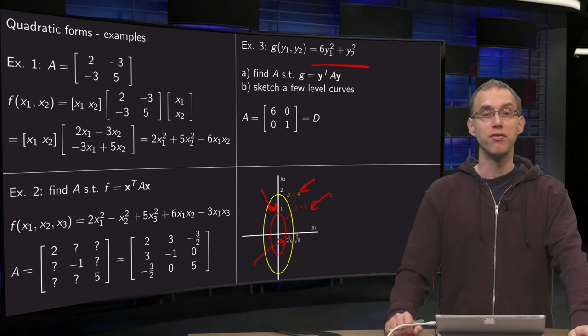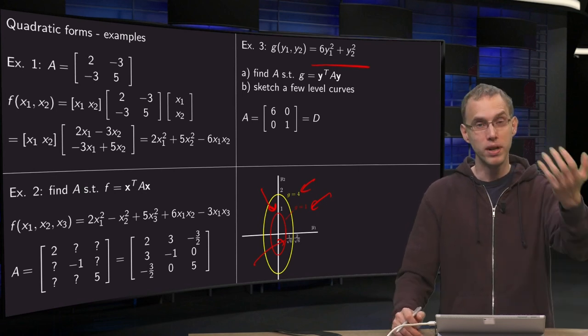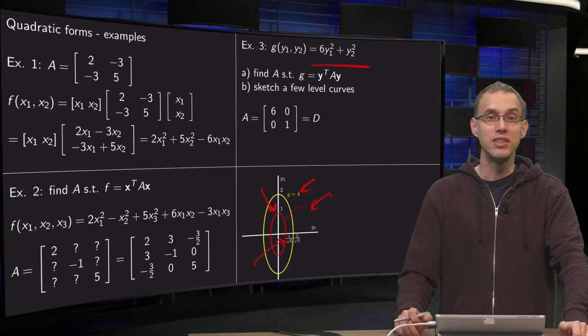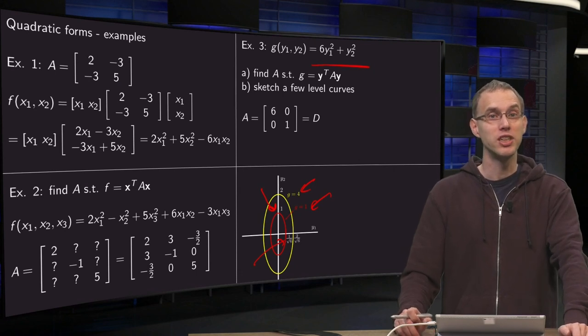If you have a quadratic form without mixed terms, your matrix becomes diagonal. And then it's relatively easy to sketch its level sets.